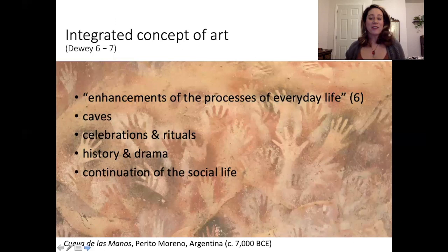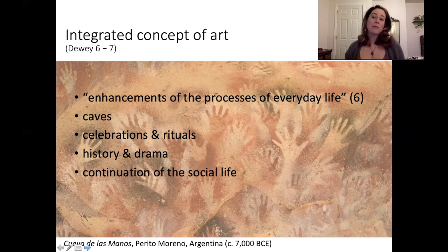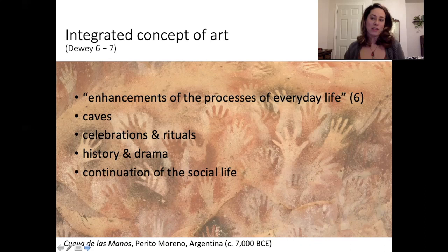Instead of this compartmentalized, remote notion of art removed from everyday experience, Dewey wants us to have an integrated concept of art. He says art used to be much more integrated into our lives — it used to be about the enhancement of the processes of everyday life. He's thinking about garments and jewelry people would wear as meaningful expressions of themselves, cave paintings in social spaces rather than galleries, and the use of music, drama, celebration, and rituals.